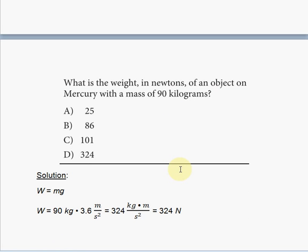It tells you the mass is 90 kilograms, so immediately you know that m = 90. To find the weight in newtons of an object on Mercury, you multiply 90 kilograms times the g specific to Mercury.